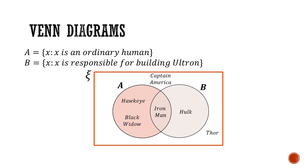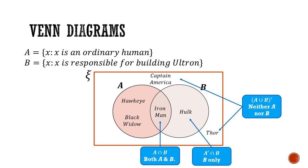This Venn diagram that we have built essentially divides the six Avengers across four regions. Iron Man is the only Avenger who qualifies to be in both set A and set B. This is the region of A intersect B. Captain America and Thor are in neither set A nor in set B. Hulk is the only Avenger who is in set B but not in set A. And Hawkeye and Black Widow are the only ones who are in set A but not in set B.